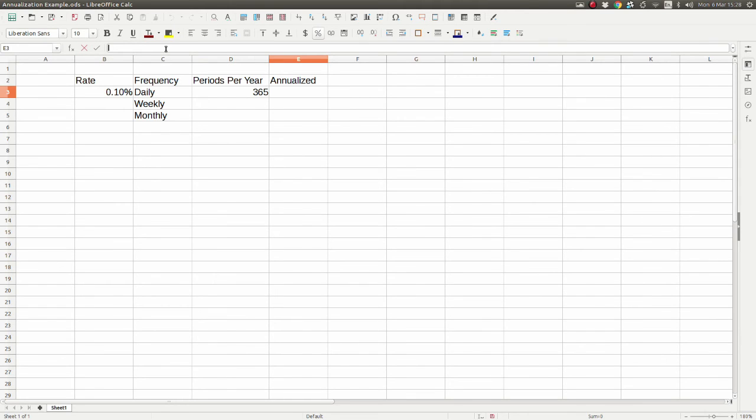And then finally, here's how we do it in a spreadsheet. We put our annualization equation into cell E3: equals, then we put our parentheses, 1 plus the daily rate in cell B3. We raise that to the power of the number of days in the year, which is in cell D3. And finally we subtract 1.